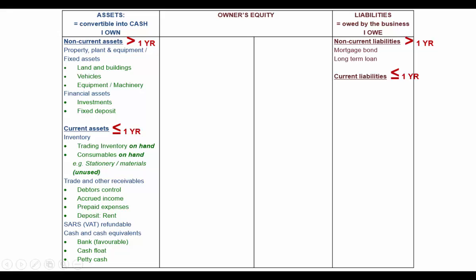Under current liabilities, we have trade and other payables. Comparing to trade and other receivables: where receivables has debtors control — somebody who owes me — payables has creditors control, somebody who I owe. Where receivables has accrued income — somebody who owes me outstanding income — the opposite is accrued expenses: outstanding expenses that are payable, which fall under trade and other payables.